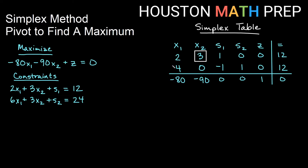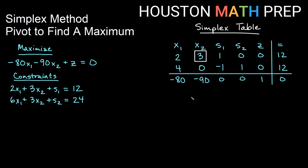We've replaced our original row two with the new row two we found. Remember, this is the column we're reducing all non-pivot entries to be zero. The only one left that needs to become zero is the negative 90, so we'll write down the row that we're changing, which is our bottom row — row three.